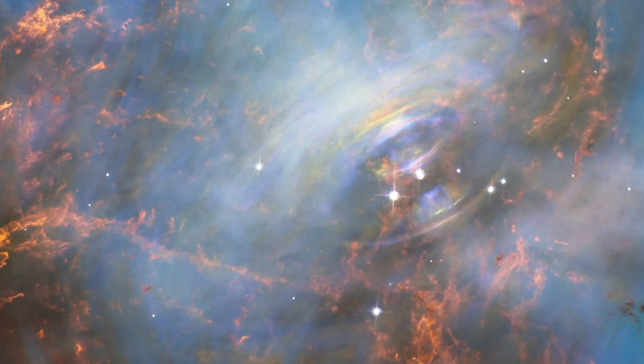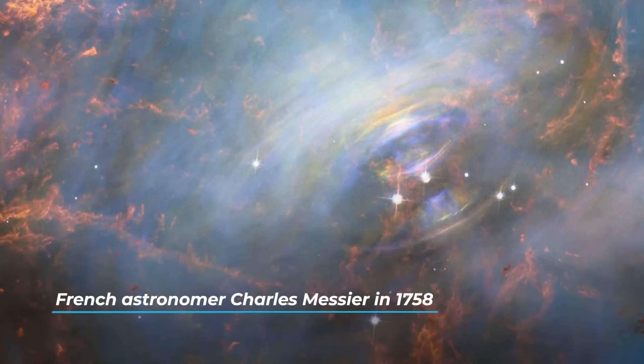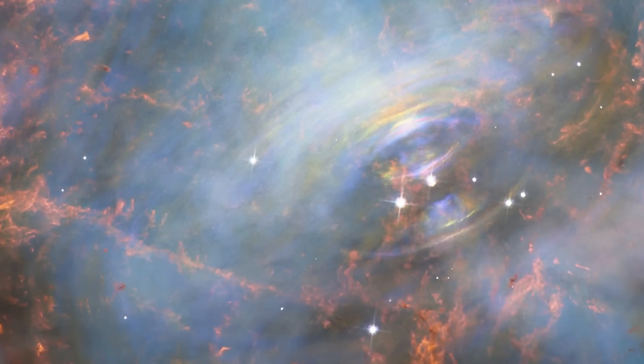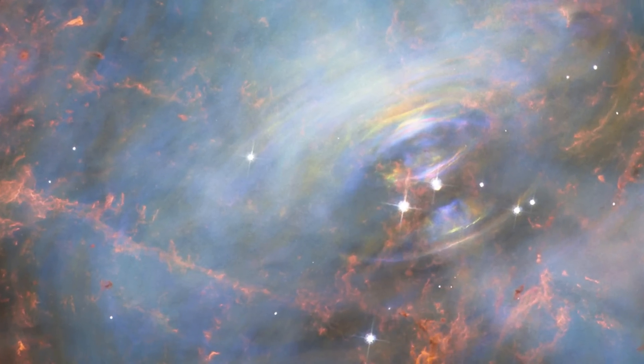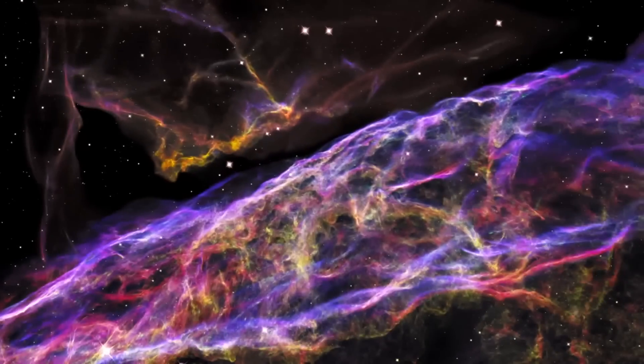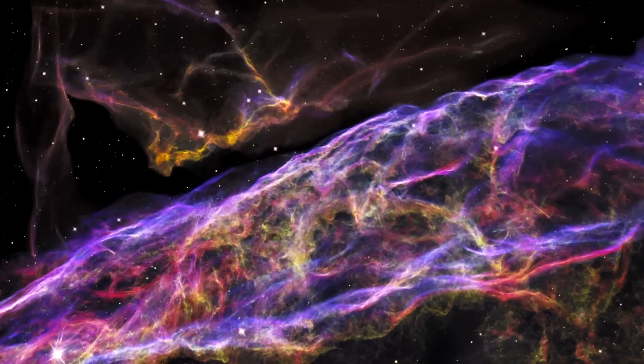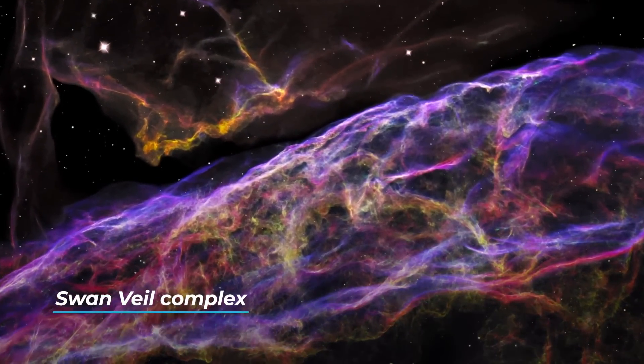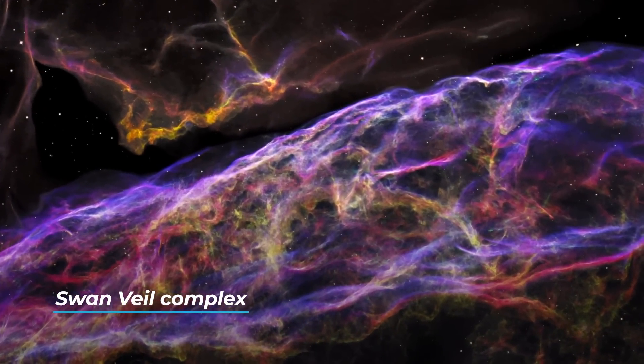M1 was observed by the French astronomer Charles Messier in 1758 while he was looking for Halley's Comet on its first expected return. Another very famous supernova remnant is the spectacular Cygnus Veil complex, much appreciated by astrophotographers.